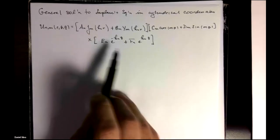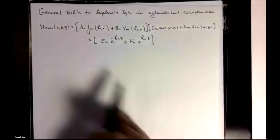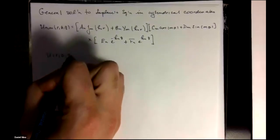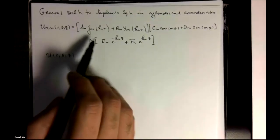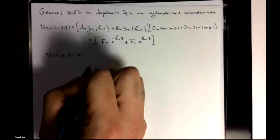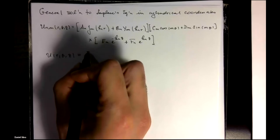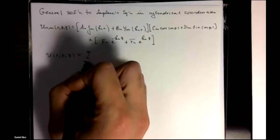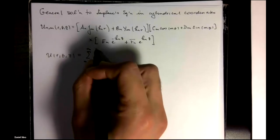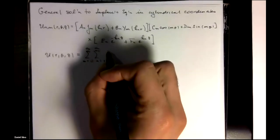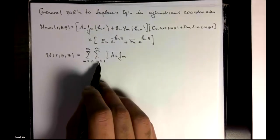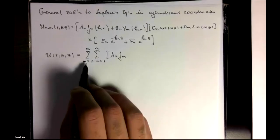And as we usually do in separation of variables, we built our general solution by superimposing all of our solutions that we found from our ordinary differential equations. And that's where we get the expression for the general solution of Laplace's equation as a double sum over m and n, n starting at 1 and m starting at 0.